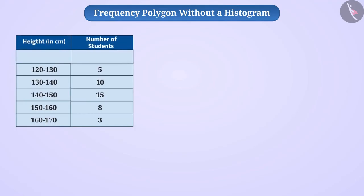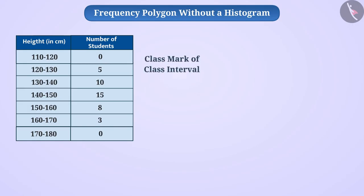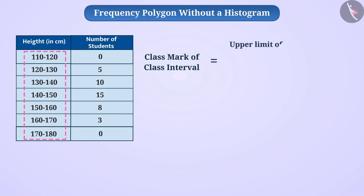Now, let us learn how to make a frequency polygon without a histogram. Here also, we take the class interval 110 to 120 before class interval 120 to 130 with a frequency of 0, and similarly after class interval 160 to 170, we take class interval 170 to 180 with a frequency of 0. To make a frequency polygon, we need the midpoint — called the class mark — of each class interval. The class mark equals the upper limit plus the lower limit of the class interval, divided by 2.